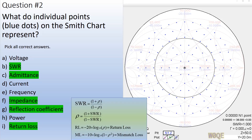Individual points on the Smith Chart represent a unique complex reflection coefficient. With that goes a unique impedance and a unique admittance, because impedance and admittance are tied together as one over the other. SWR, reflection coefficient, and return loss are all tied together as well. I didn't show mismatch loss, which is the opportunity loss where the generator could have generated more power into the load but didn't because of the impedance it sees — but all these other values are correct.